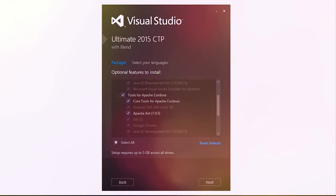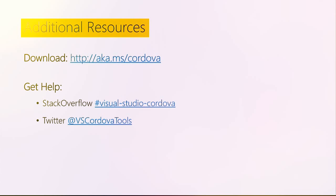Once you check this box, we take care of ensuring we download dependencies, configure them, and make sure they work properly for your specified configuration. After installation is complete, you're ready to start building Apache Cordova apps. Go ahead and download Visual Studio by going to aka.ms/Cordova.